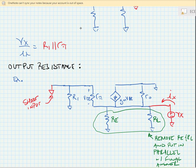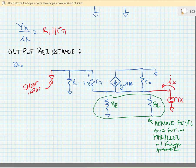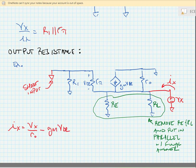So let's go ahead and write our KCL expression. We have Ix equal to Vx divided by R sub 0 minus Gm times Vbe plus Vx divided by Rpi.